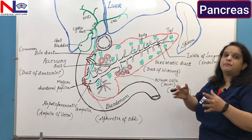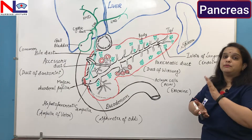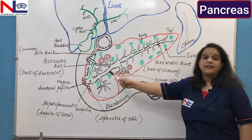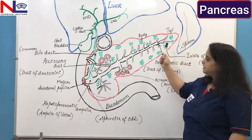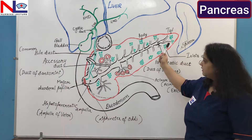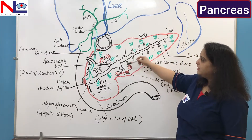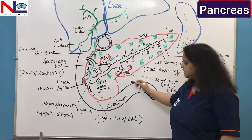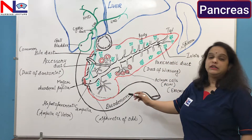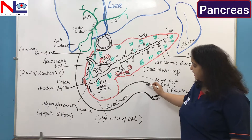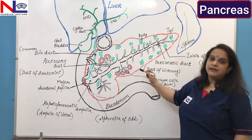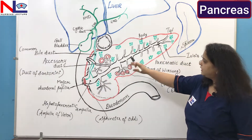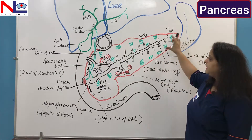The hilum is the fissure or depressed area in the spleen that allows blood vessels to enter the organ. The pancreas is a J-letter shaped organ, about 10 to 15 cm long and 2.5 cm wide. The head of this organ lies within the concavity of the duodenum, which is the first part of the small intestine. It extends from there to the hilum of the spleen, running obliquely and transversely toward the left side.